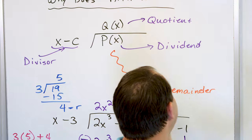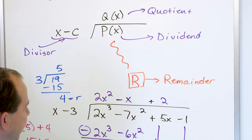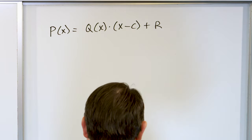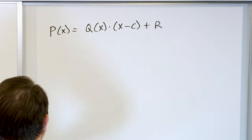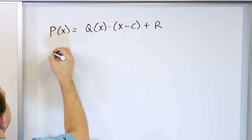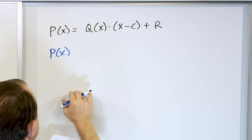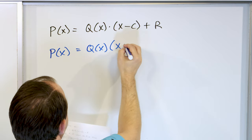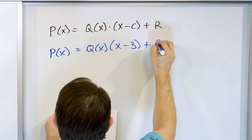We're just checking our work, and it has to equal what's underneath. So for this case, this times this plus the remainder has to equal the original polynomial. What we're basically saying is this polynomial p of x is going to be equal to q of x times x minus 3, because we divided by x minus 3, plus the remainder.